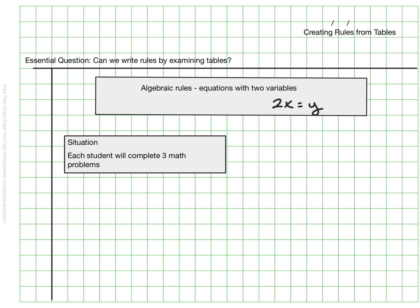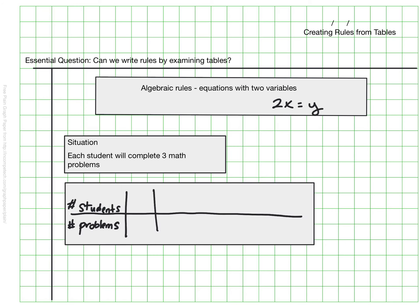We'll start with the situation that says each student will complete three math problems. And I'm going to start this by creating a table. This table will help me organize how many problems there will be if I know how many students there are. And since we know each student is doing three problems, I know that if there's one student, that student's doing three.